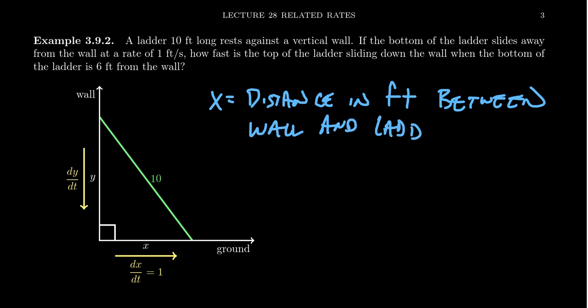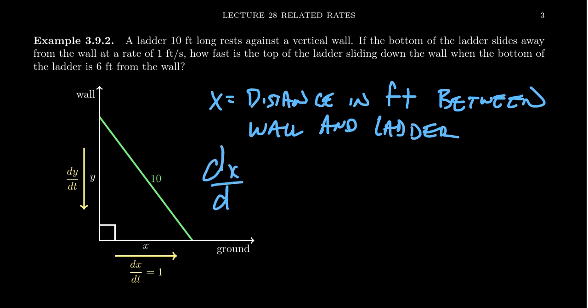X represents the horizontal distance we see in our diagram. As the ladder slides away from the wall, as time elapses, X gets bigger and bigger — X is increasing. That tells us it's going to have a positive derivative. We're told specifically that the rate at which the ladder is sliding away from the wall is one foot per second, so the derivative of X with respect to time equals one foot per second.